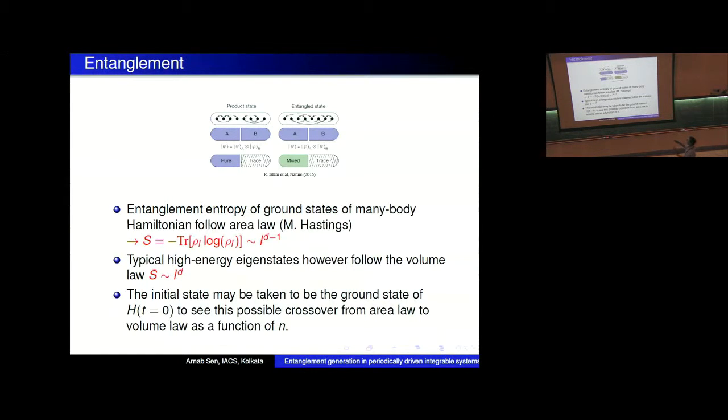The entanglement entropy behavior of the ground states and typical high energy excited states is actually fundamentally different from each other. If you have these localized degrees of freedom which were spins, if degrees of freedom in region A are coupled to degrees of freedom in region B and you partially trace out region B, even though the full density matrix is that of a pure state, this reduced density matrix would look like a mixed density matrix. For the ground state of typical local Hamiltonians, this follows the so-called area law. This entanglement entropy scales as l^{d-1} whereas for typical high energy states it scales as l^d. This is called area law scaling and this is called volume law. One immediate question is how does this crossover take place?